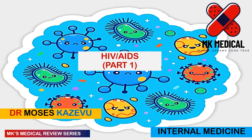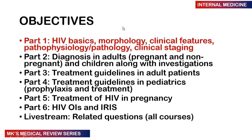Grab your piece of paper, grab your pen and let's go. There are six parts to this lecture. In this part today, we're going to be looking at the basics of HIV: the morphology, the clinical features, the pathophysiology, the associated pathologies, and the clinical staging. I will show you a bit of the opportunistic infections here and there, but I won't go into details because I want to cover them in detail when I come to part six.